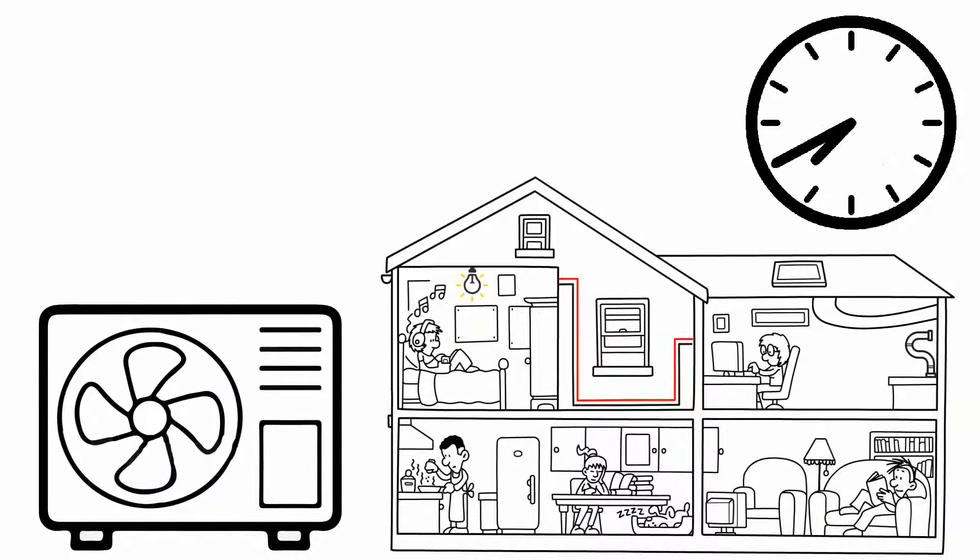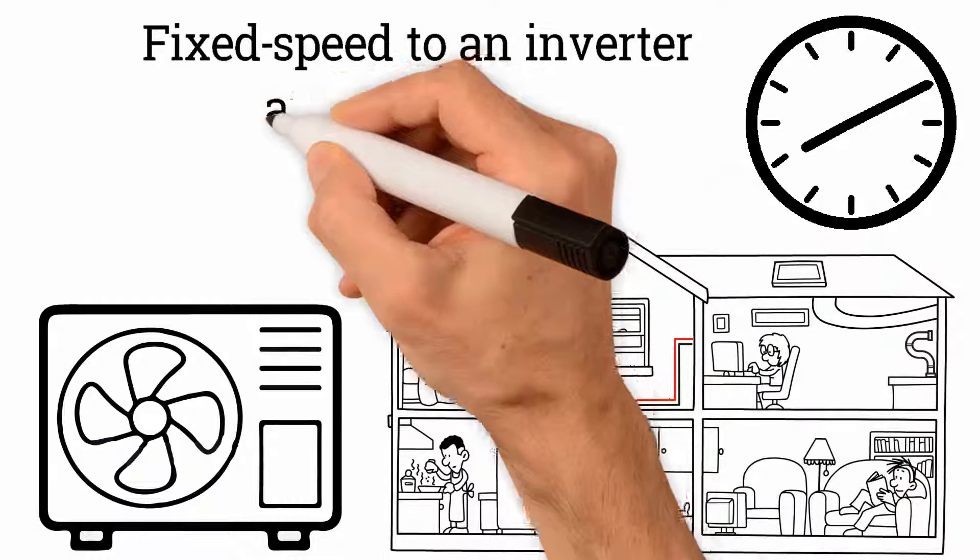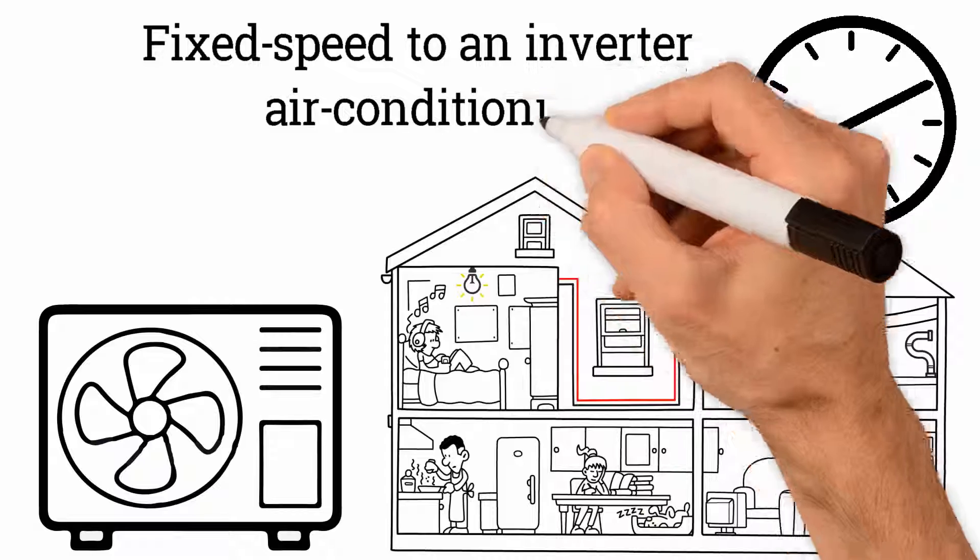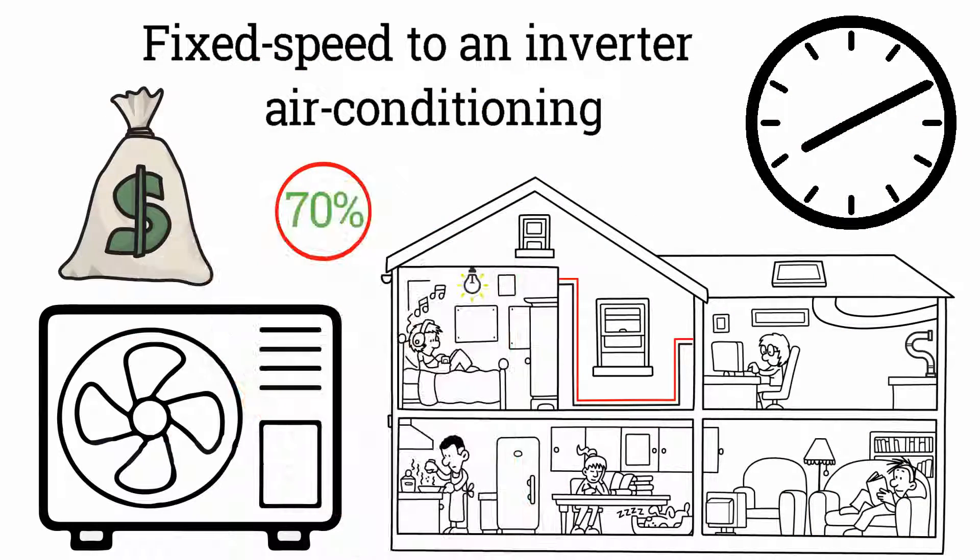After three hours of work, your air conditioning system will go from being an old fixed speed to an inverter air conditioning unit that saves over 70% power, saving you lots of money.